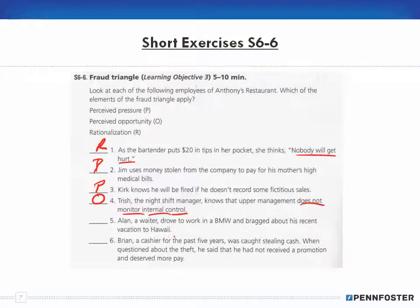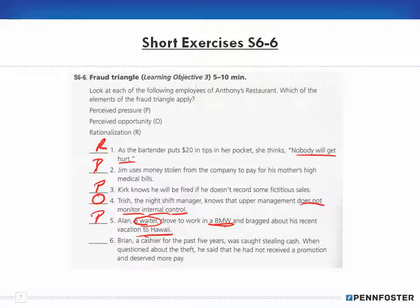Alan, a waiter, drove to work in a BMW and bragged about his recent vacation to Hawaii. The vast majority of waiters can't afford a BMW or vacations in Hawaii, so he would need money to support those things. That creates pressure on his part to commit fraud.